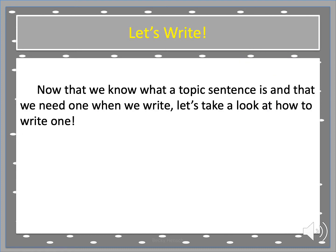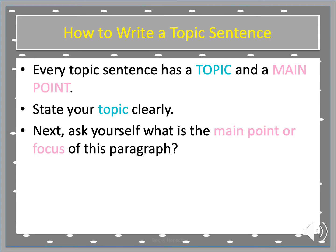So now that we know what a topic sentence is, and that we need one when we write, let's take a look at how to write one. Every topic sentence has two parts: a topic and a main point. The topic will be shown in blue, and the main point will be in pink. You have to state your topic clearly, and then ask yourself: what is the main point or focus of this paragraph? It sounds hard, but stay with me — let's look at an example.